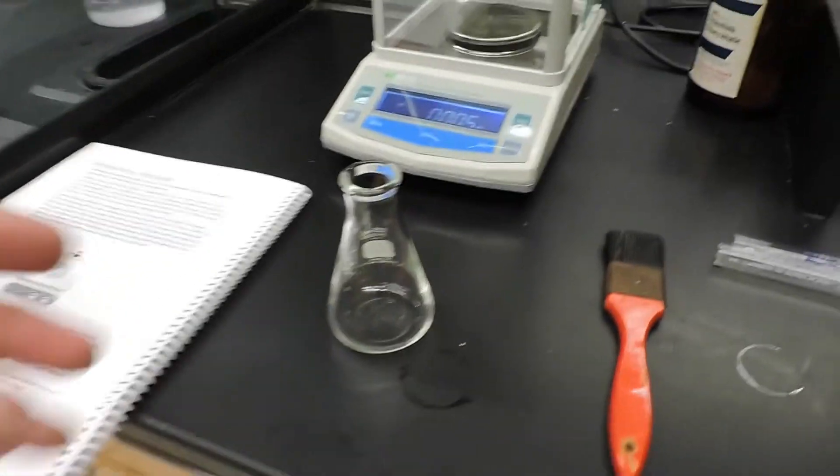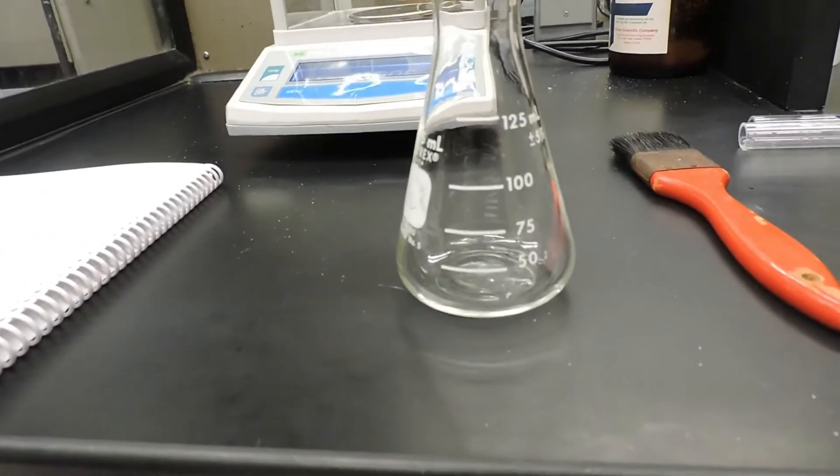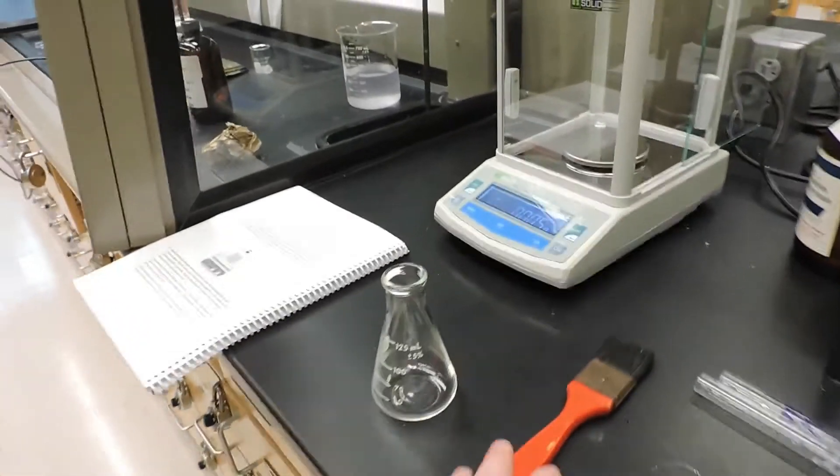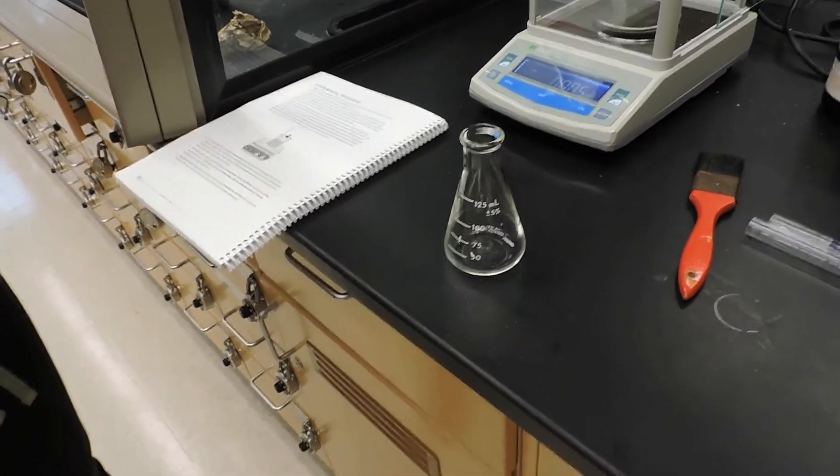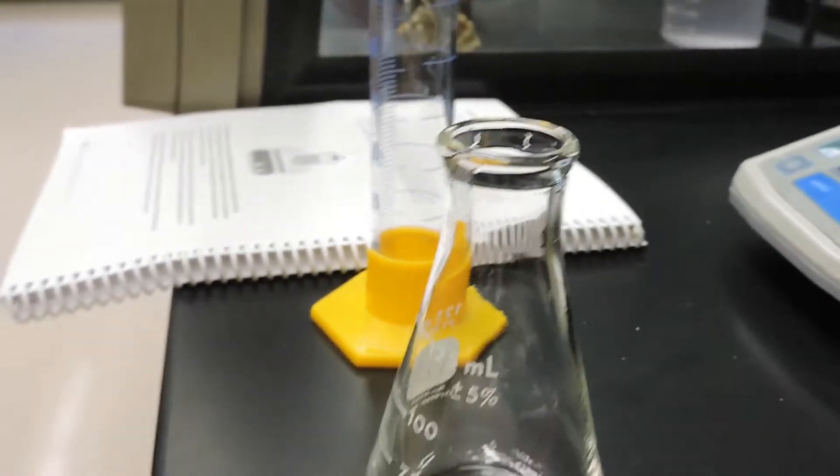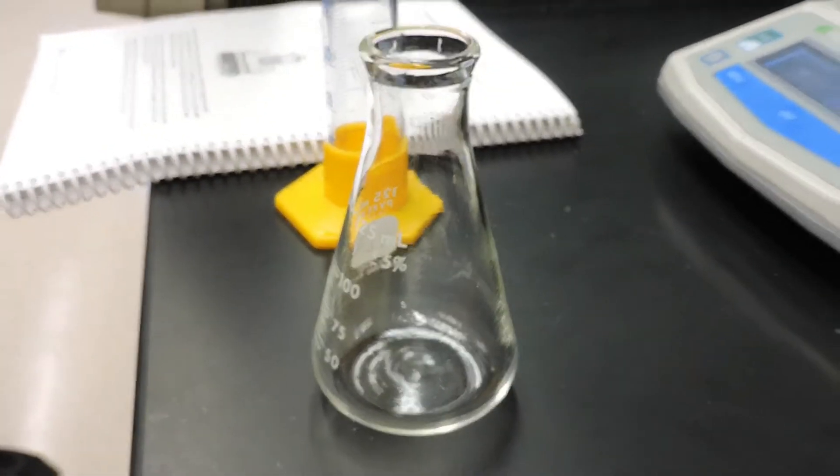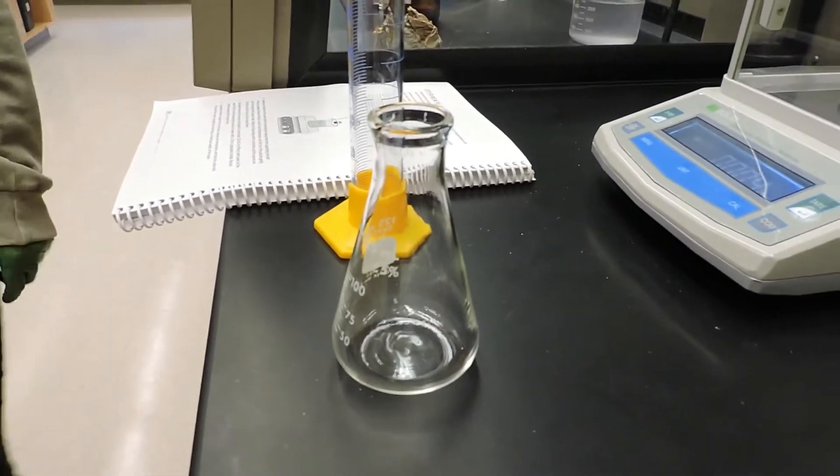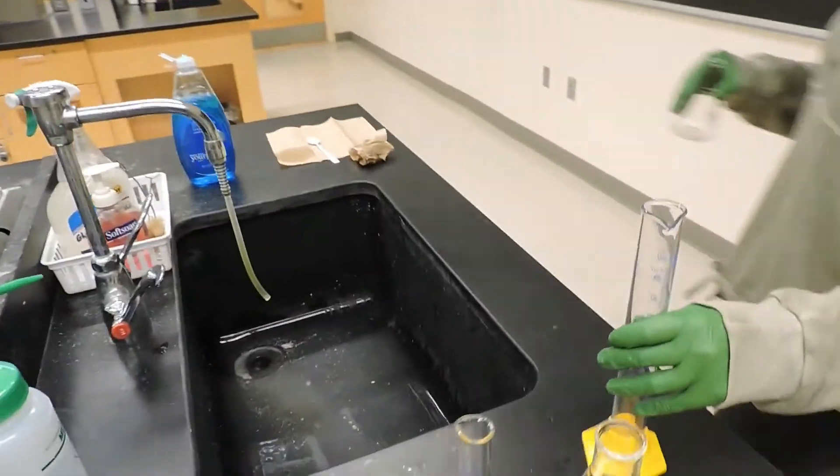It's also important for this lab to know the complete volume of the 125 milliliter Erlenmeyer flask. It may seem that a 125 milliliter Erlenmeyer flask is self-explanatory that it holds 125 milliliters, however a gas will actually fill the entirety of the Erlenmeyer flask. So we need to fill it with water to the brim to determine how much space is actually in the flask.